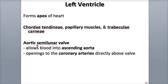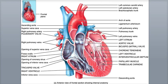From the aortic semilunar valve, the blood flows into the ascending aorta. Some of this blood is then directed into the coronary arteries — both right and left — that supply the heart wall, while the rest of the blood flows on through the arch of the aorta and continues into the descending aorta, where it is delivered to the rest of the body. From the left ventricle through the aortic semilunar valve into the ascending aorta, the left and right coronary arteries would be around here, then through the arch of the aorta and down the descending aorta.